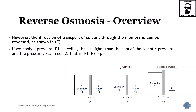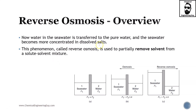However, the direction of transport of solvent through the membrane can be reversed for our convenience. If we apply a pressure P1 that is higher than the sum of the osmotic pressure and the actual feed pressure, we can counterbalance this effect. Water from the seawater side is then transferred to the pure water side. The ions cannot pass through the membrane, so only the solvent moves. This phenomenon is called reverse osmosis — it is used to partially remove solvents from a solid-solvent mixture by applying external pressure.